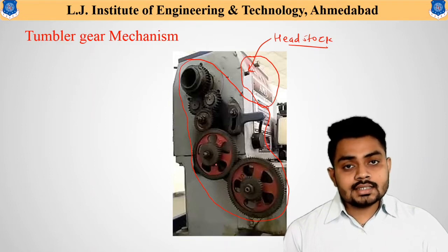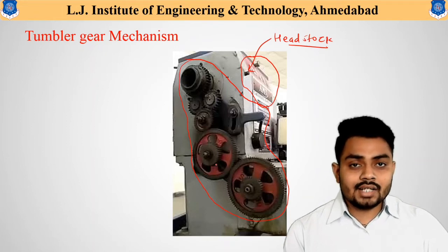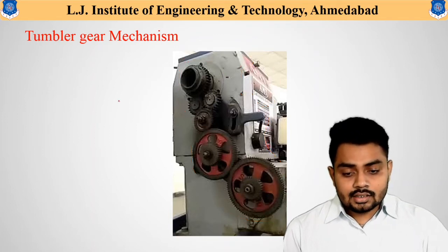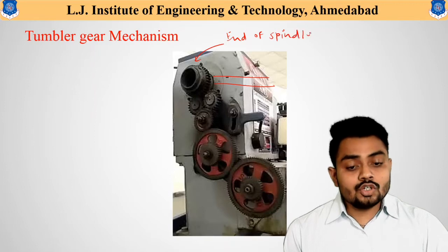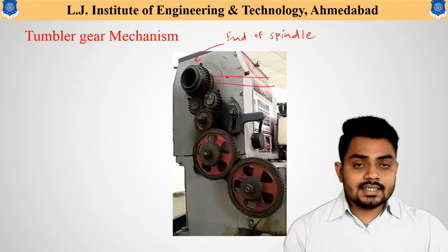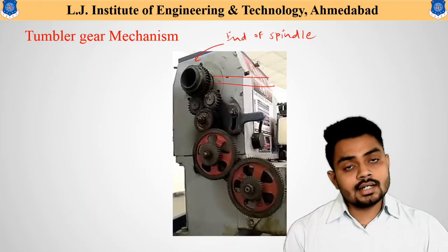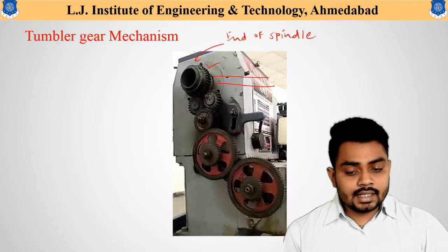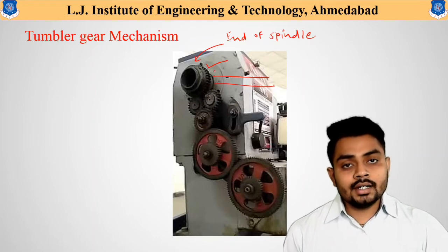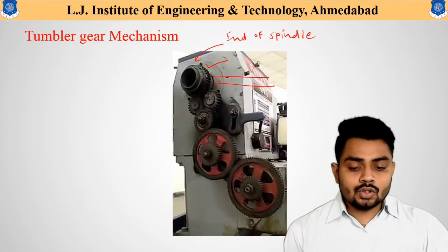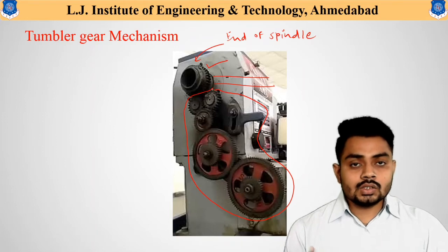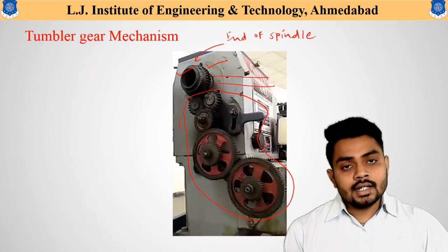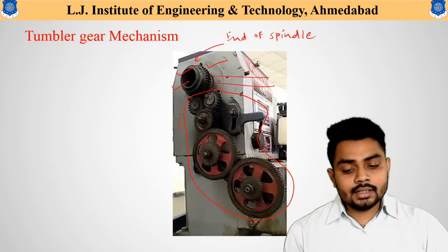To understand how this mechanism operates, let us look at the different gears available. This section is the end of the spindle. Power is transmitted to the spindle, which is connected to the workpiece, causing the workpiece to revolve about its axis. At the end of the spindle, one gear is attached and it rotates with the motor. In normal condition, all the below gears are in a disengaged condition — there is no connection between the end gear and the lower gears during normal machining.